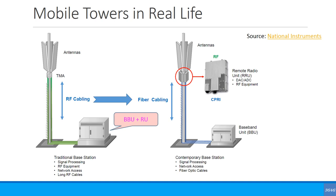You would generally also have the filters and power amplifiers in the RRU, while the baseband unit stays down in the cabinet. A single baseband unit can connect to multiple remote radio units, serving all of them.